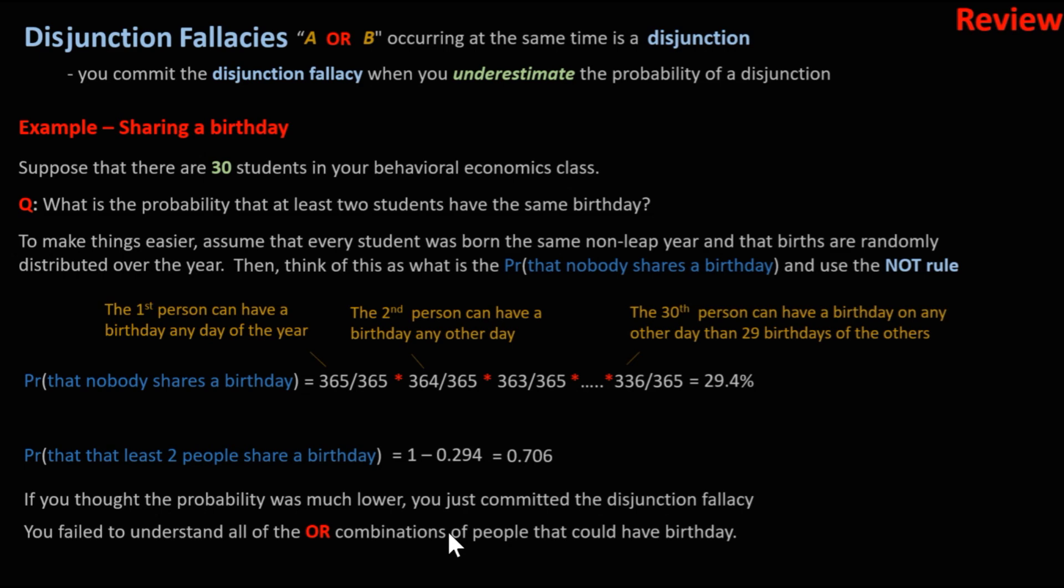What we failed to take into account or understand was all the possible combinations. The first and second classmates could share a birthday, or the first and third, and so on all the way through 30 people.